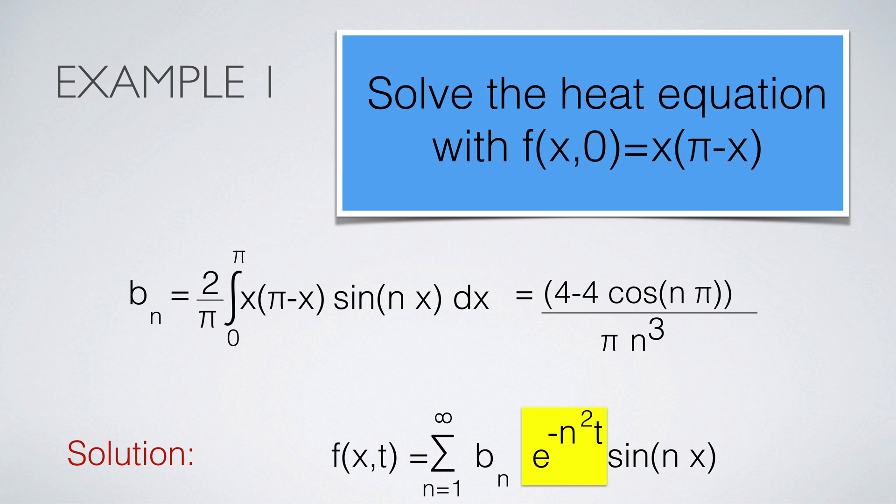Here is the first example. We want to solve the heat equation for the function f(x) equal to x times π minus x. We compute the Fourier coefficients b_n, then write down the solution. All the work which is needed is in the computation of the Fourier series.